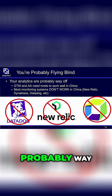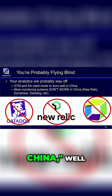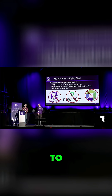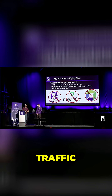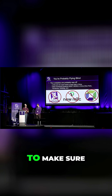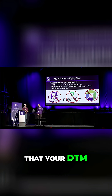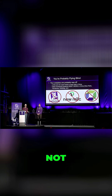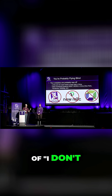The other problem is your analytics are probably way off. If you think you only get 2% of your traffic from China, the problem is you might be losing anywhere from 1 out of 2 to tons of your GTM traffic. Additionally, your Adobe Analytics traffic — unless you take specific actions to make sure your DTM tags fire in China — you're probably not getting any analytics from China at all. So that datum of 'I don't get traffic in China' may be entirely wrong.